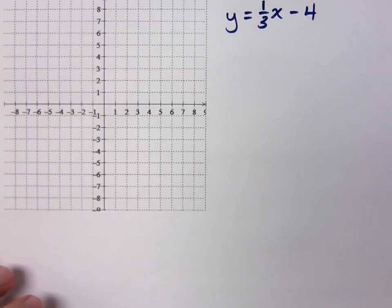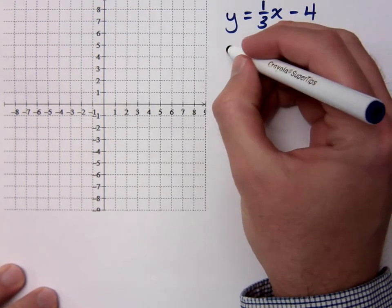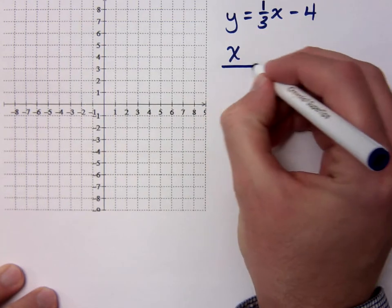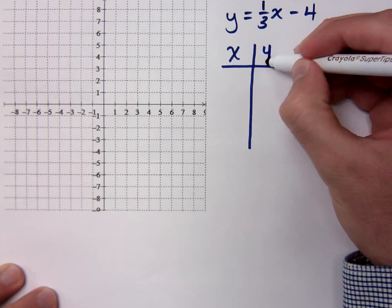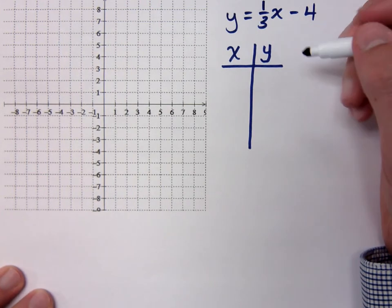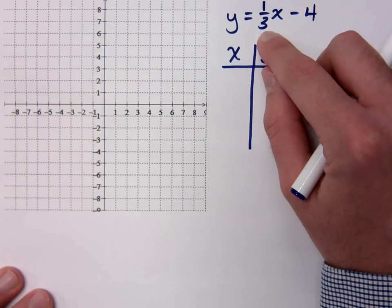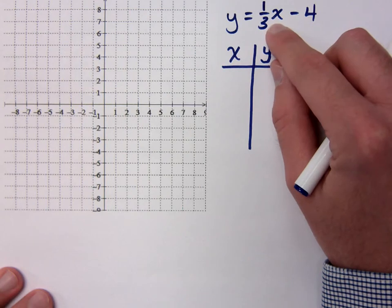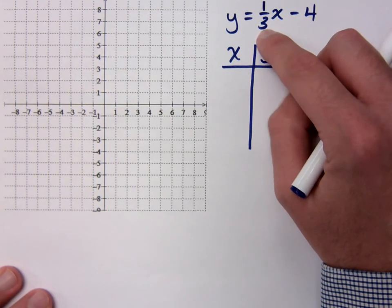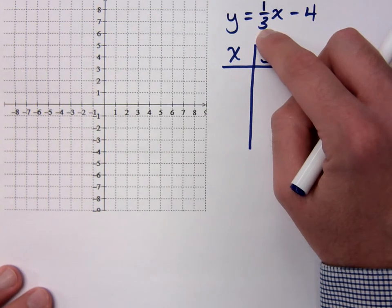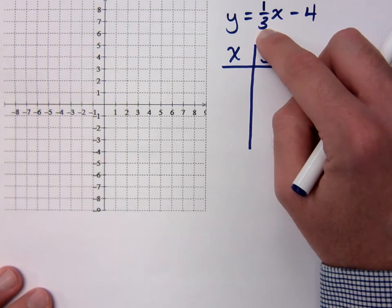If we try to graph this one just like the last problem and make a t-table of values, I want to caution you against always picking 0, 1, and 2. Because if you look at this equation, you've got a fraction here. So whatever value you plug in for x, you've got to multiply it by one third, and that's not necessarily going to work out well. What we do for problems like this is pick numbers that give us nice math.